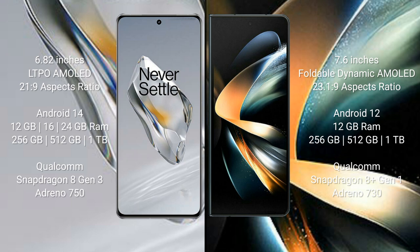OnePlus 12 comes with 12GB, 16GB, or 24GB RAM and 256GB, 512GB, or 1TB internal storage. It is powered by the Qualcomm Snapdragon 8 Gen 3 processor and Adreno 750 GPU.